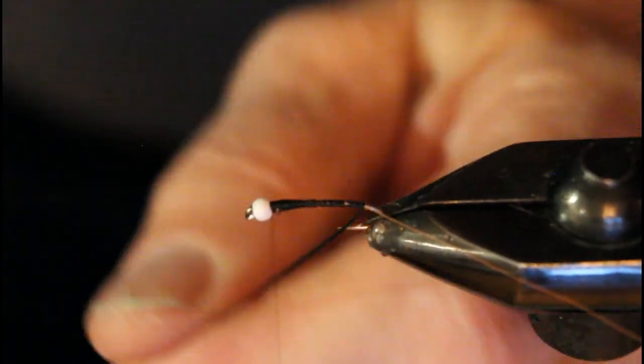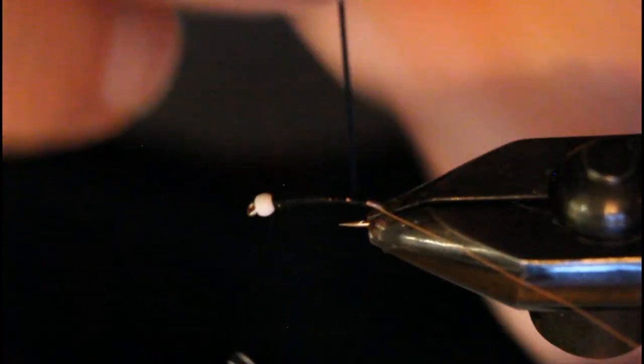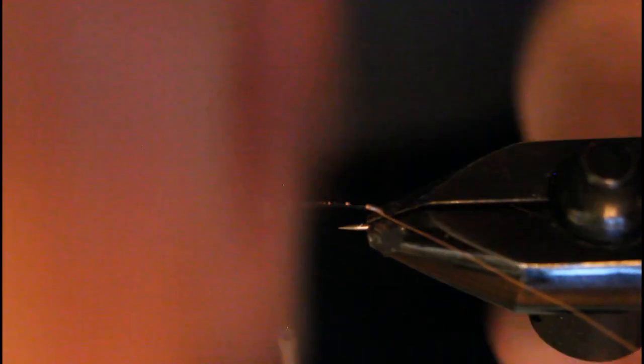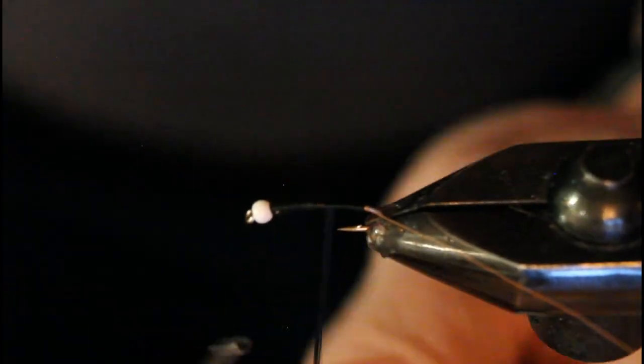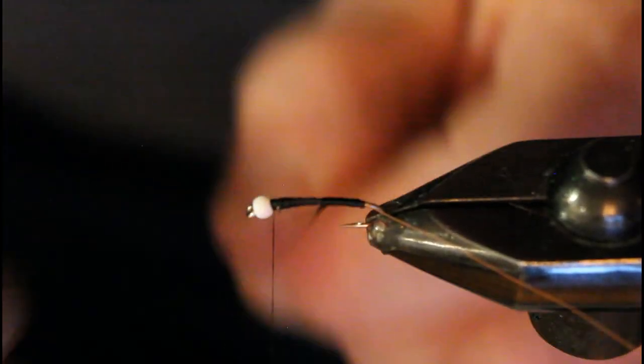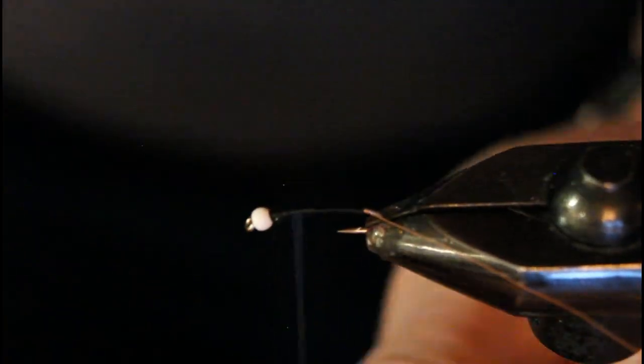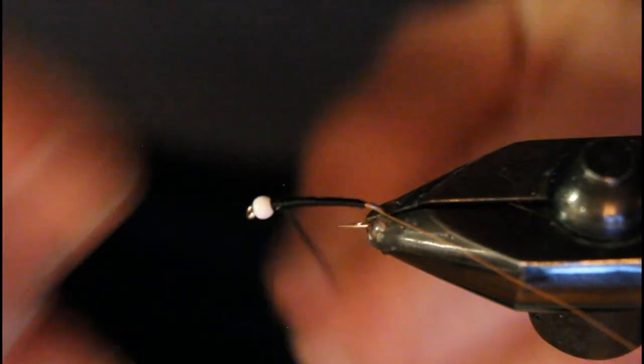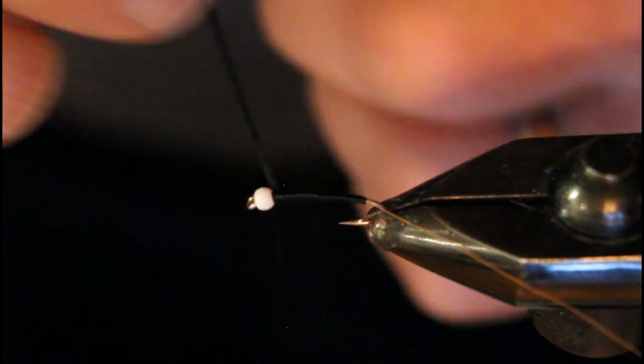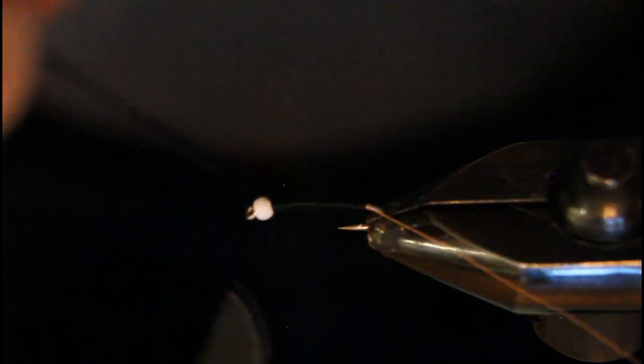So now the floss comes forward in nice even wraps, and you see it has a bit more of a sheen than the thread does. Very simple way to present that natural looking sheen. Of course, you can tie these in acetate floss and dip them in acetone. They give a very nice sheen that way, but again I'm keeping it simple and as close to the original that I tied 40 years ago as possible.